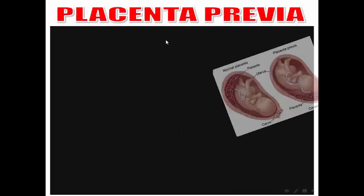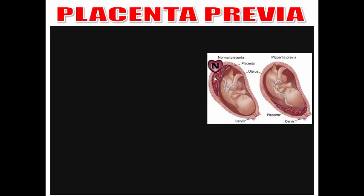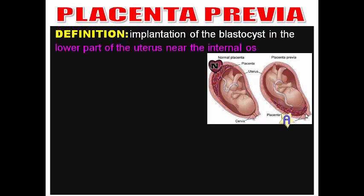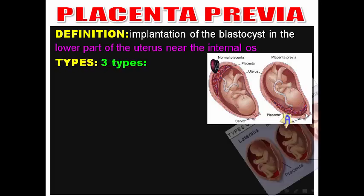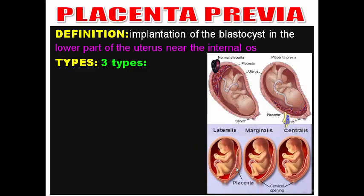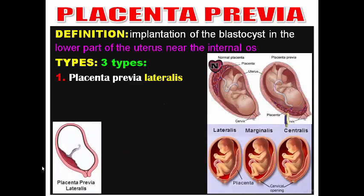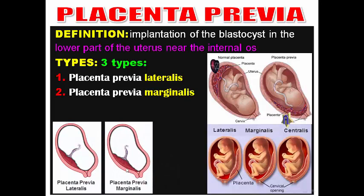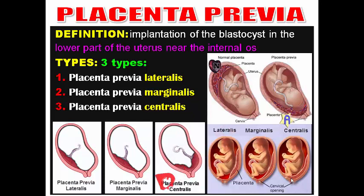Placenta previa: the normal site of the placenta is in the upper part of the posterior wall of the body of the uterus. Placenta previa is implantation of the blastocyst in the lower part of the uterus near the internal os. We have three types: placenta previa lateralis, placenta previa marginalis, and placenta previa centralis, which completely covers the internal os and is very dangerous because premature separation of the placenta may cause severe bleeding.